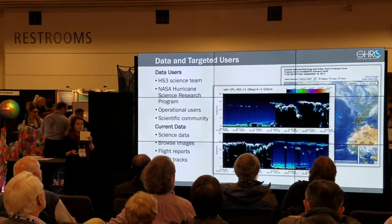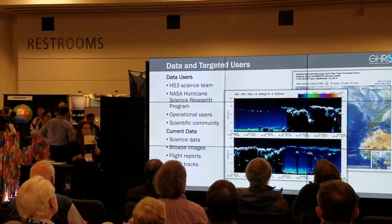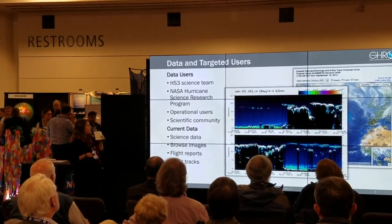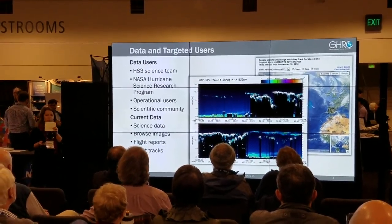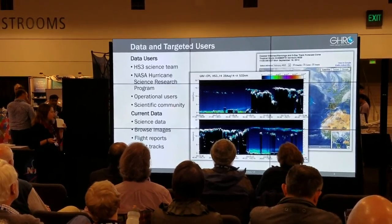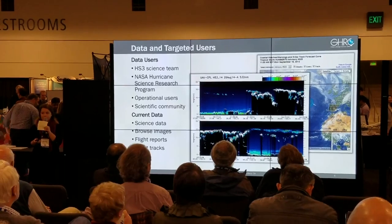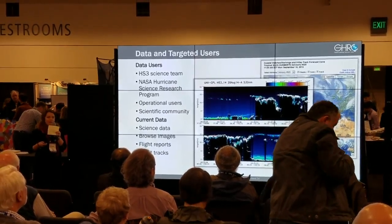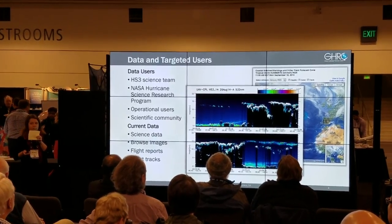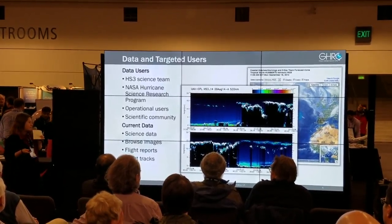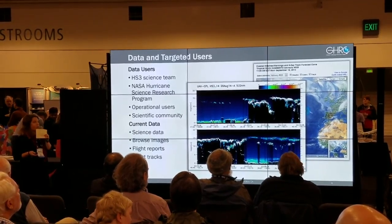The tool was originally tailored to appeal to a series of data users, including our HS3 science team members, the NASA Hurricane Science Research Program, operational users, and the broader scientific community. The current data includes scientific data collected by instruments, generally formatted in NetCDF CF format, browse images created by the PIs of these experiments, as well as flight reports and flight tracks.